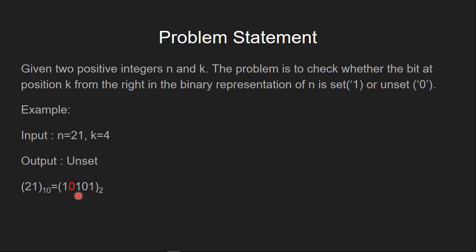Let's see another example. If the number n equals 21 and position k equals 4, then the output is unset, because here in the binary representation of 21, the fourth bit is 0, so we output unset.